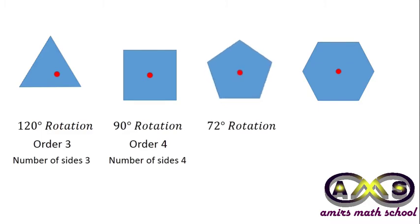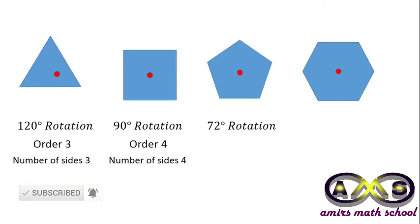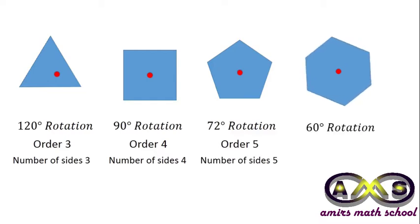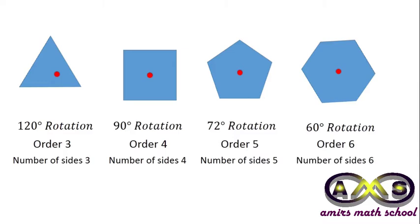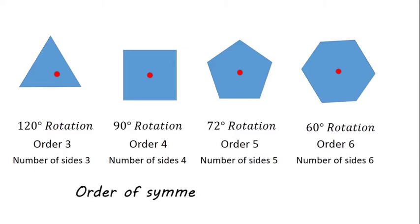For a pentagon, after 72 degree rotation, it became identical with the initial one and it has rotational symmetry of order 5. And a pentagon is 5-sided. For a regular hexagon, after 60 degree rotation, it became identical with the initial one. So, the regular hexagon has rotational symmetry of order 6, and the number of sides for a hexagon is 6. So, we can say the order of symmetry equals the number of sides for a regular polygon.